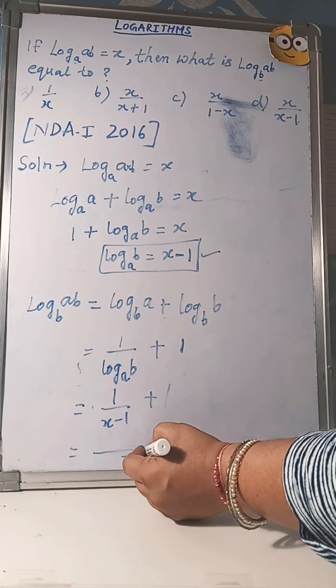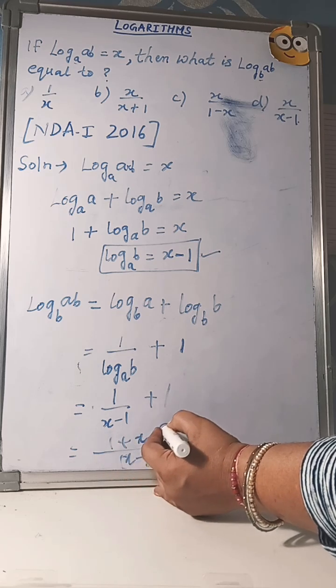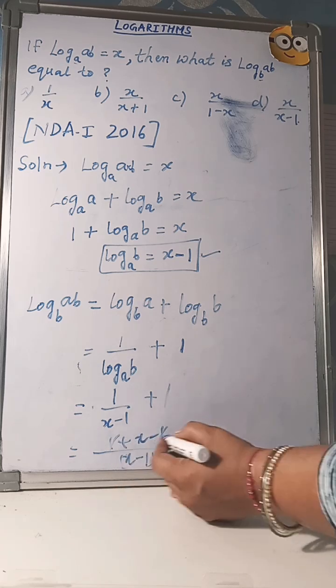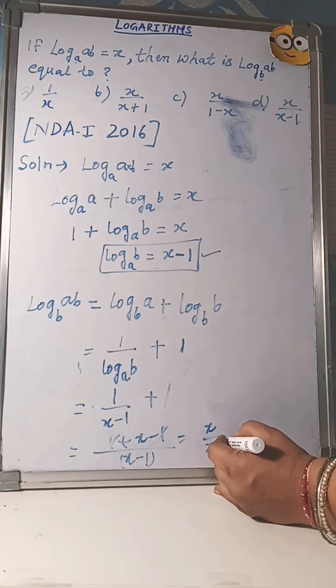LCM is taken by x minus 1. 1 plus x minus 1, plus 1 minus 1 cancel. Then x upon x minus 1.